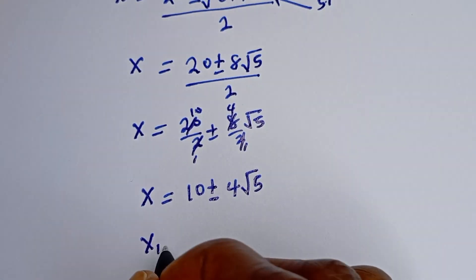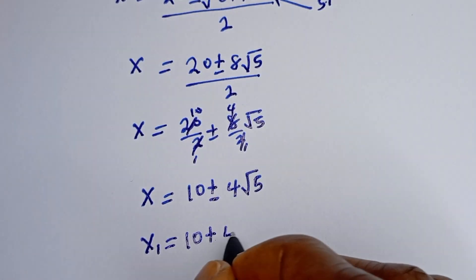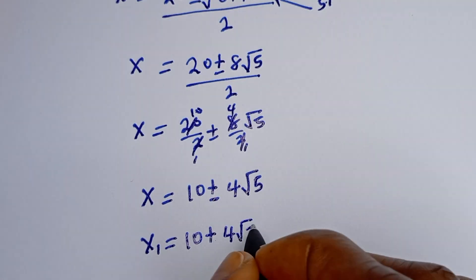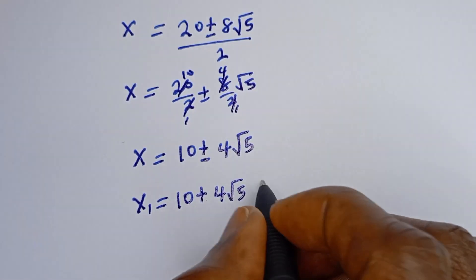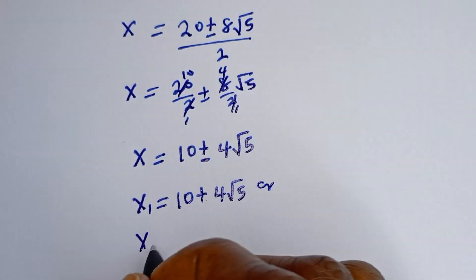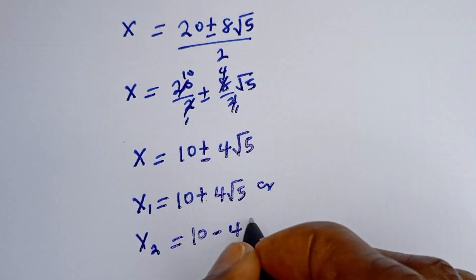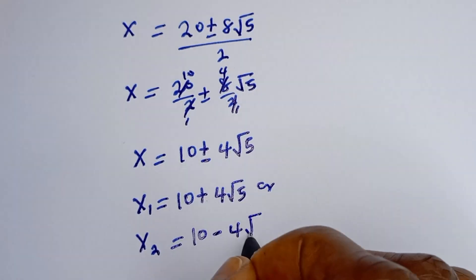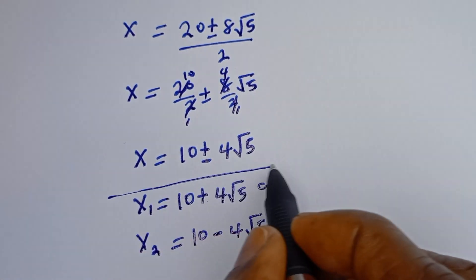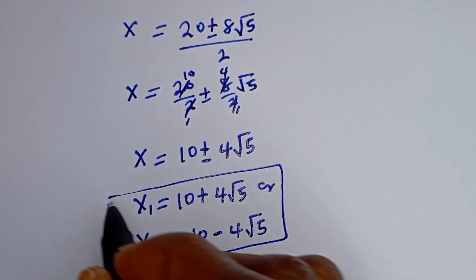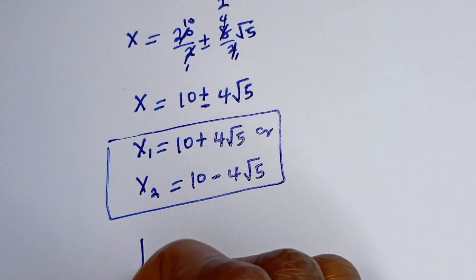Therefore our final answers for S are: S1 is equal to 10 plus 4 root 5, or S2 is equal to 10 minus 4 root 5. We've got the values of S; now we can solve for Y using equation 3.